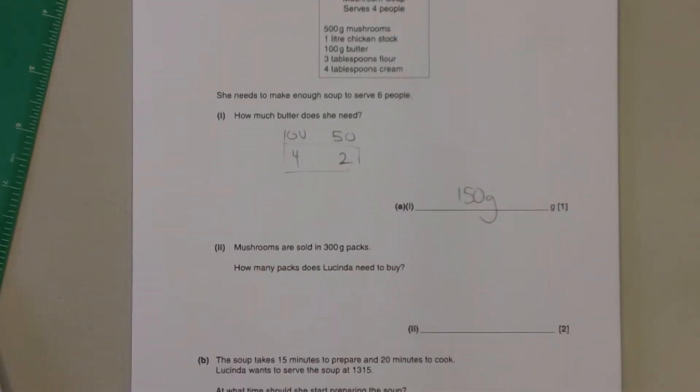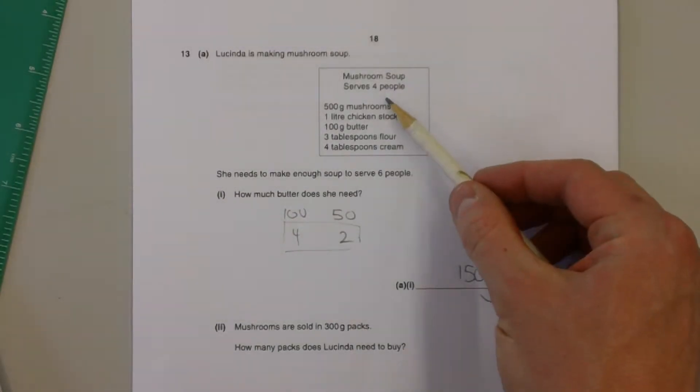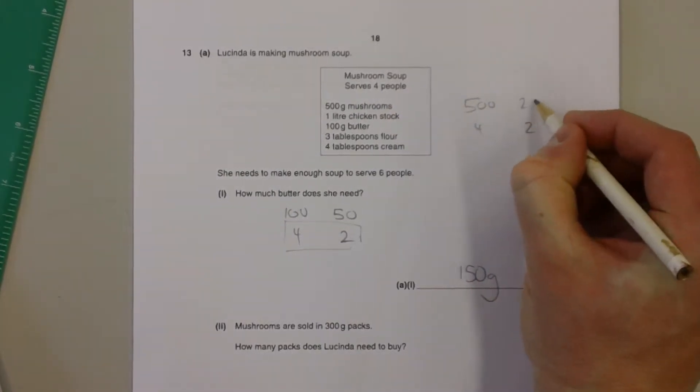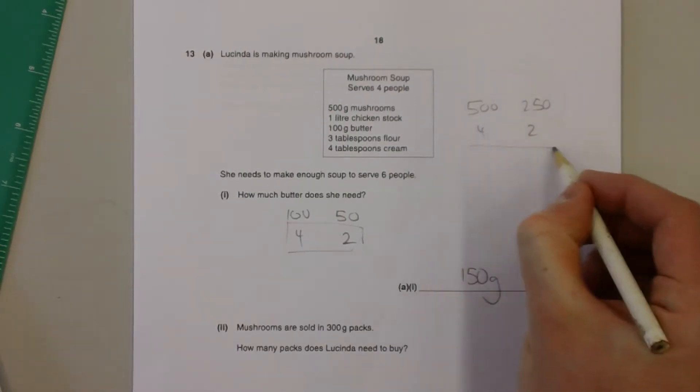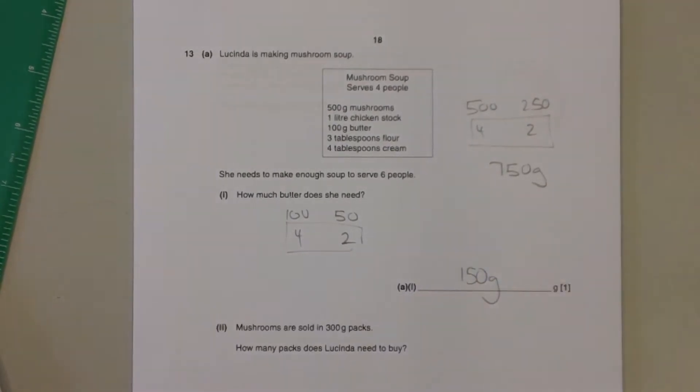Mushrooms are sold in 300 gram packs. How many packs does Lucinda need to buy? Well, for four people she needs 500 grams of mushrooms. That means for two people she would need 250 grams, so for six people she's going to need 750 grams of mushrooms.